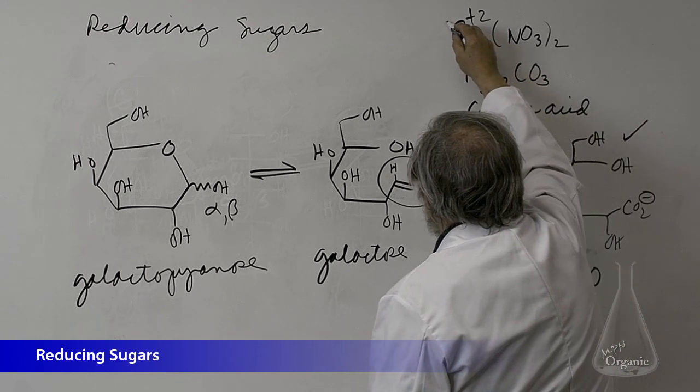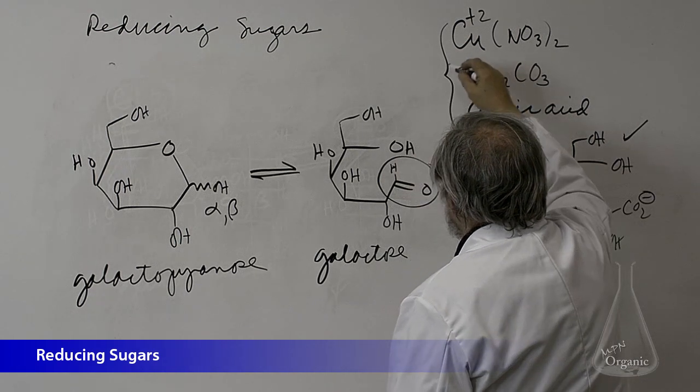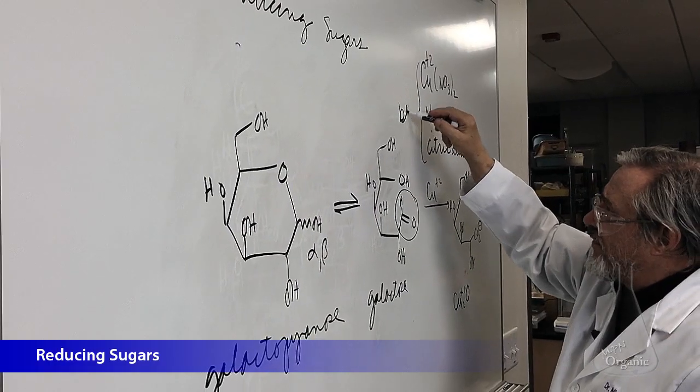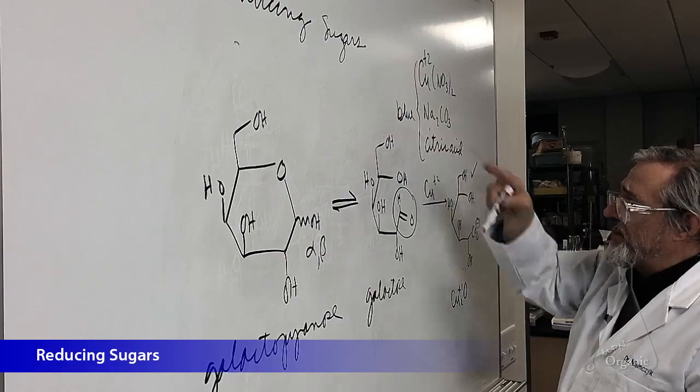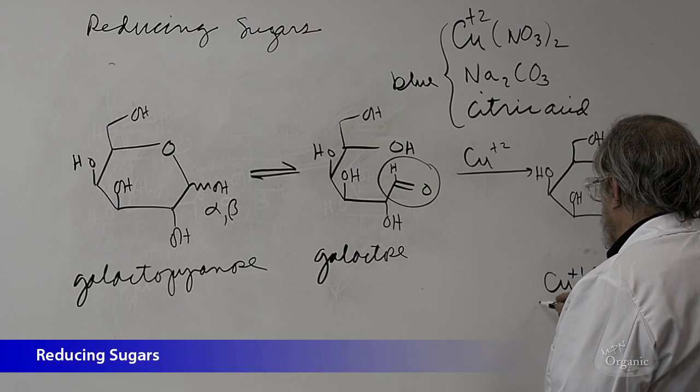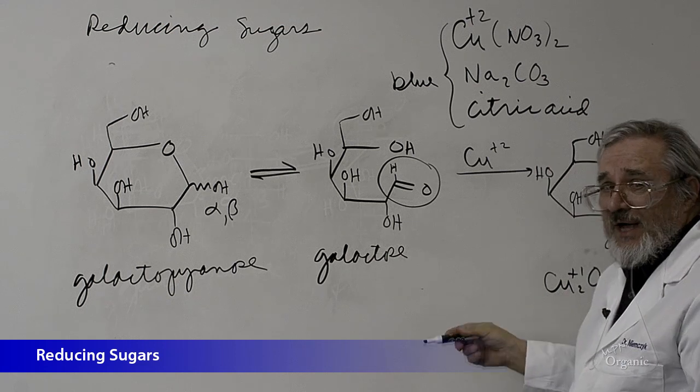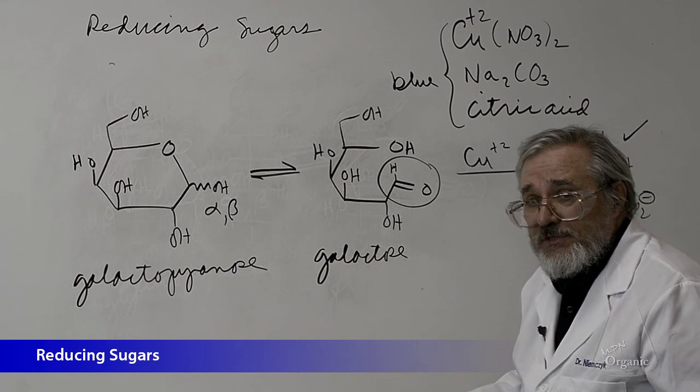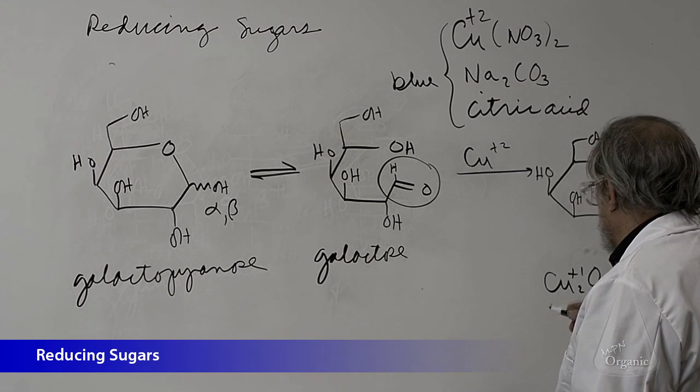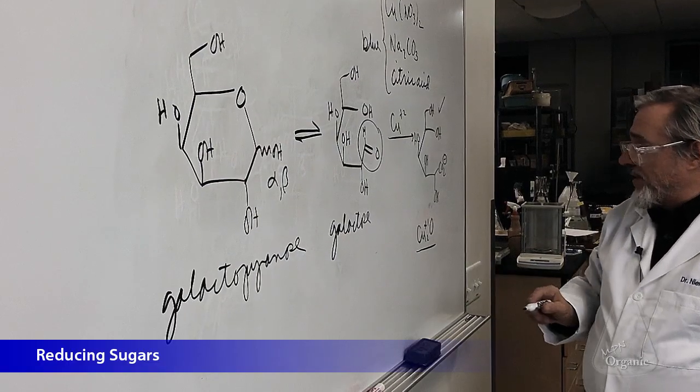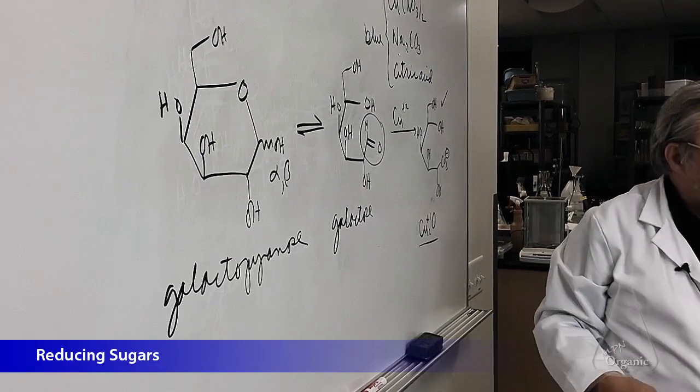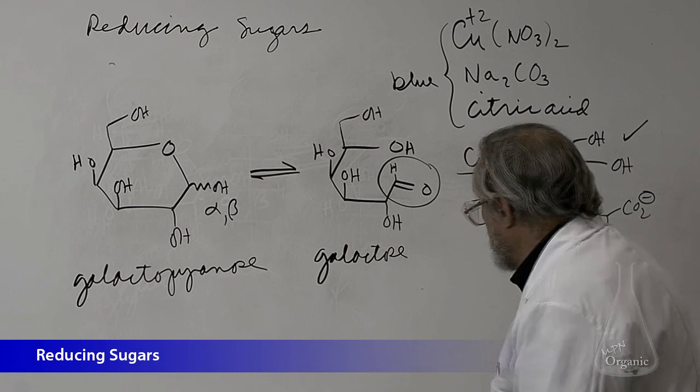Now, interestingly, the color of this is a deep blue. So what you have is a deep blue solution going to a reddish brown precipitate of copper I oxide. We call this brick red for some reason. It doesn't look like brick red to me, but it's usually stated in a textbook as a brick red solution.